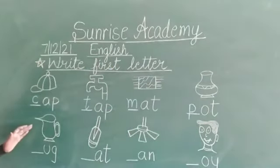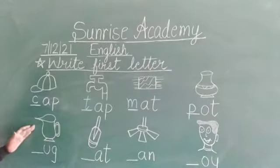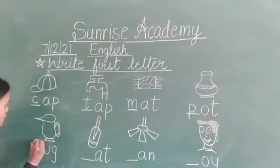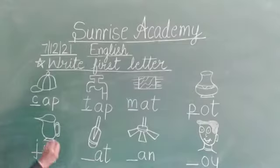Now, next picture — whose is it? Jug. J. So, what will we write? J. J, U, G — jug.